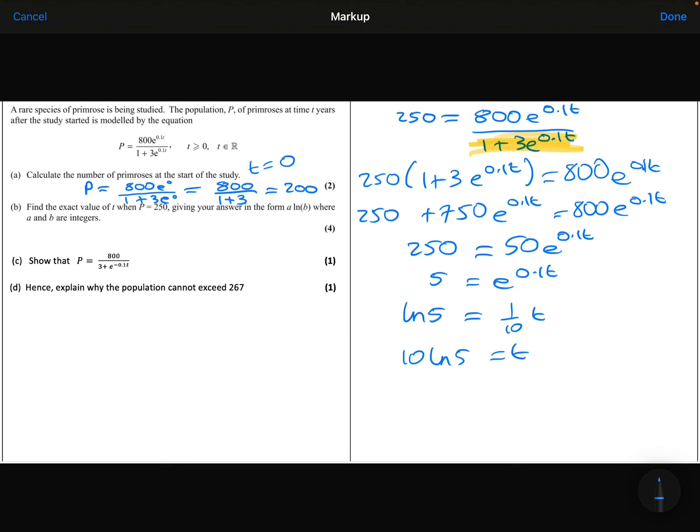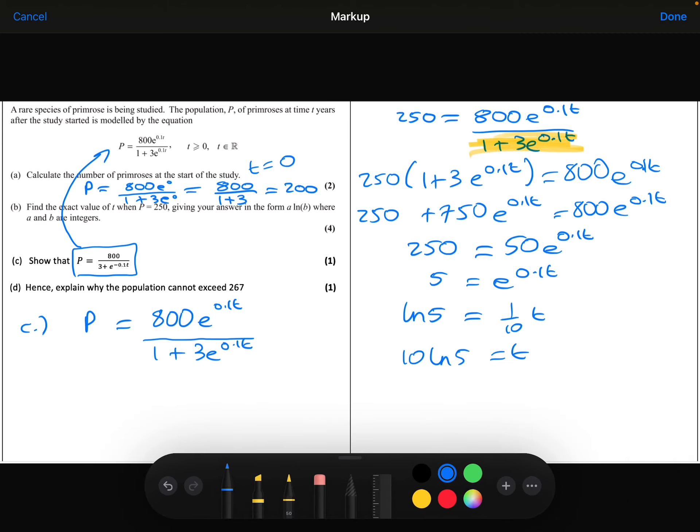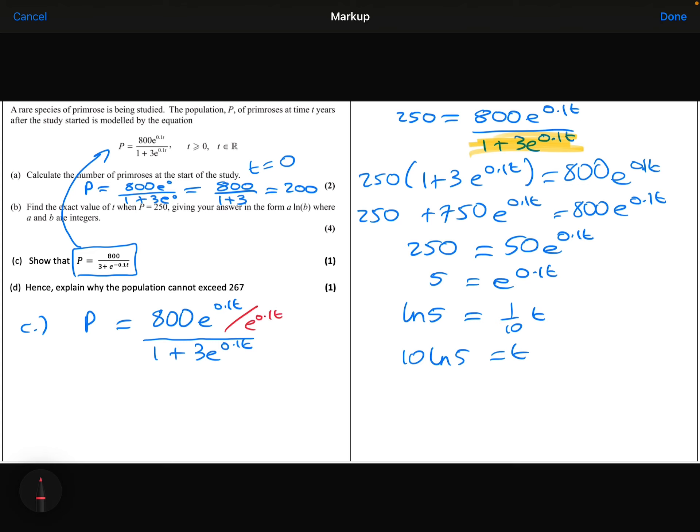Part C. I need to show that P can be written in this form here. So let's just compare that to what I started with. So I started with 800 e to the 0.1t on the numerator, and I have ended up with just 800. So what's happened here is I have divided the numerator by e to the 0.1t. Now obviously you can't just divide the numerator unless you also divide the denominator at the same time.